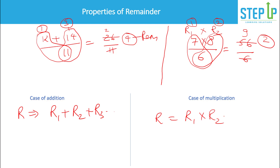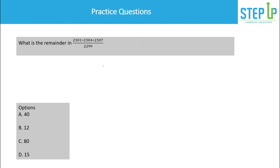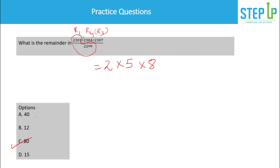Let's apply this to a harder problem: what is the remainder when 2301 × 2304 × 2307 is divided by 2299? The exam setter doesn't expect you to multiply these large numbers. Instead, find each remainder separately: 2301 ÷ 2299 gives r1 = 2, 2304 ÷ 2299 gives r2 = 5, and 2307 ÷ 2299 gives r3 = 8. Then 2 × 5 × 8 = 80 is your answer.